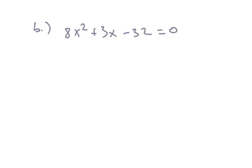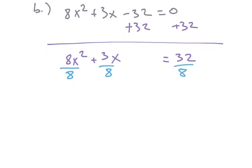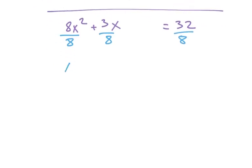The next one's a little bit harder because the leading coefficient is eight, so we're going to have to do something a little different than before. But we're going to start this the same way — we're going to add 32 to both sides. So this gives us 8x squared plus 3x equals 32. The easiest way to deal with this is to divide through by eight, and this gives me x squared plus three-eighths x equals four. So now I have a leading coefficient of one.